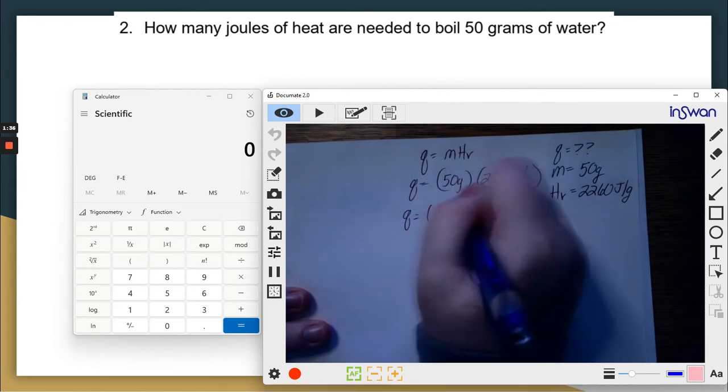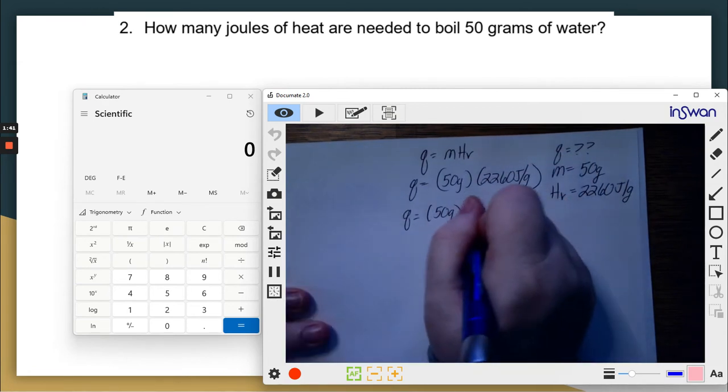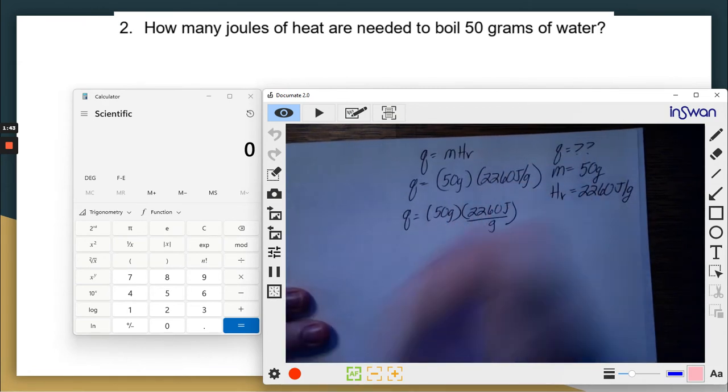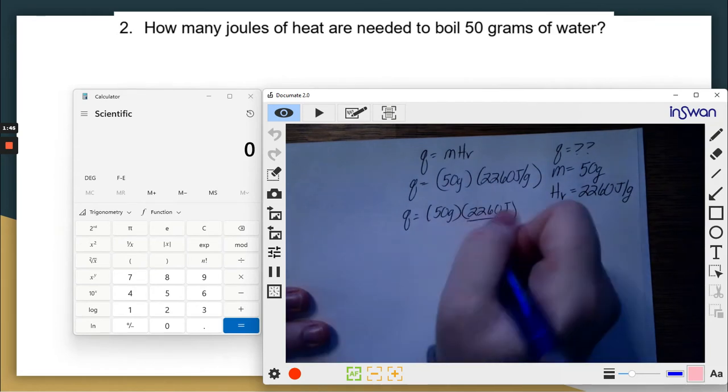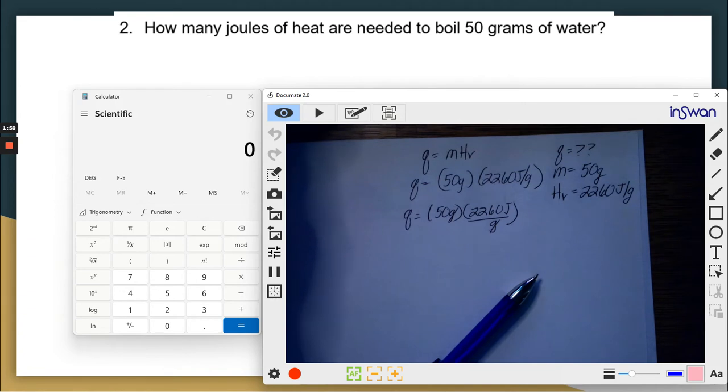2,260 joules. The per means it's really underneath, like this. Okay. So that means I'm going to be able to cross out grams left with joules, which is a unit for heat. So now let's do the math.